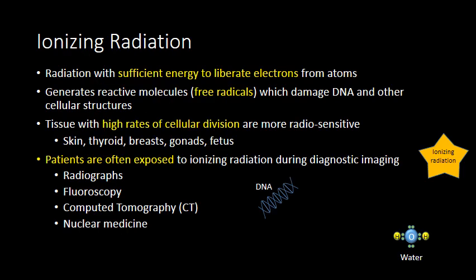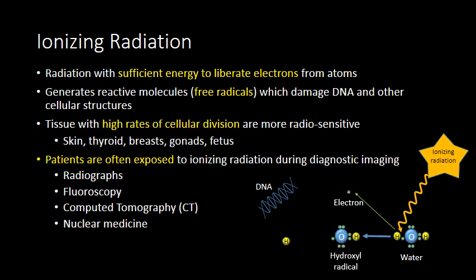When discussing radiation, we most commonly are talking about ionizing radiation. Ionizing radiation is a high-energy form of radiation that has sufficient energy to cause ejection of electrons from the orbit of a particular molecule. In this case, we have a water molecule that's struck by radiation. The electron is ejected from the water molecule, and that results in the formation of a free radical — in this case, a hydroxyl radical.